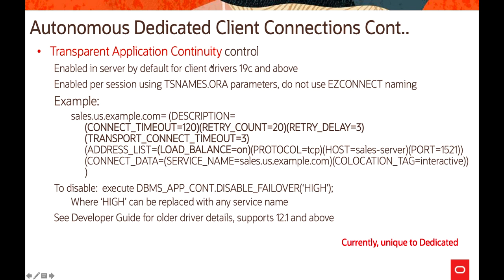Transparent Application Continuity is enabled on the server by default and requires no configuration for client drivers version 19c and above. It is enabled per session using tnsnames.ora — do not use Easy Connect naming. The service descriptor includes parameters such as connect timeout, retry count, retry delay, and transport connect timeout. To disable it, you can execute DBMS_APP_CONT.DISABLE_FAILOVER on the 'high' service name, which can be replaced with any service name — high, medium, low, tp, or tp_urgent. See the developer guide for older driver details.